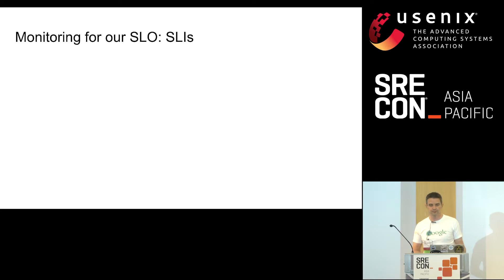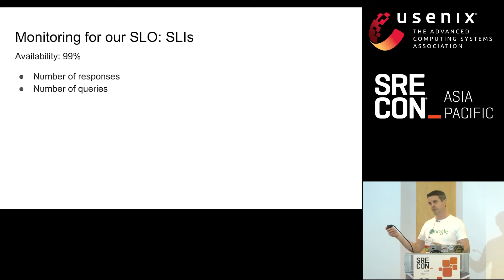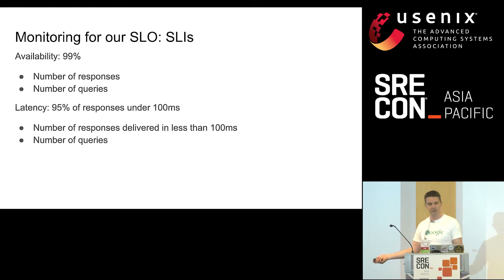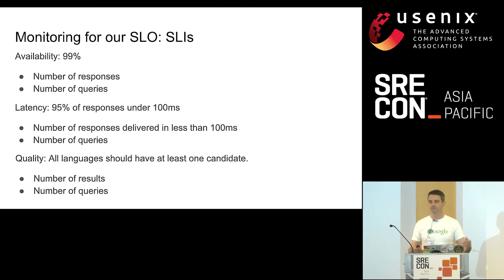We'll start with our SLOs and figure out how to measure them. First, we want 99% availability — to figure that out we need the number of responses sent for the number of requests received. We have a latency target that 95% of responses should be delivered in under 100 milliseconds, so we need to measure how many responses were delivered under 100 milliseconds. And the business has a quality metric: all languages requested should have at least one candidate, so we need the number of results by the number of requests.